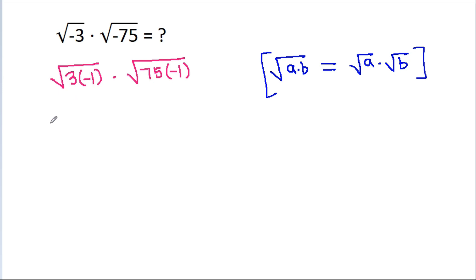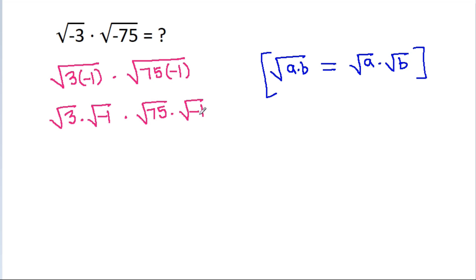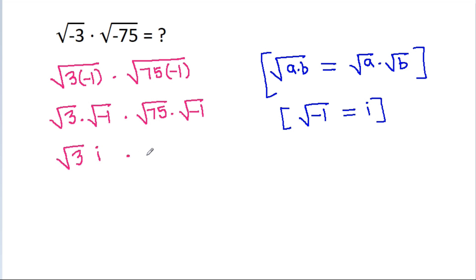So, this will be square root of 3 times square root of minus 1, times square root of 75 times square root of minus 1. And square root of minus 1 is equal to iota. So, it is square root of 3 times iota times square root of 75 times iota.